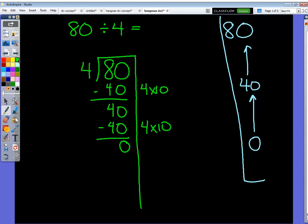How many 4's did it take to do it? Well, I did 4 times 10 and then I did 4 times 10 again. 10 plus 10 is 20. So that means 20 4's makes 80. 80 divided by 4 equals 20. Let's try one more example.